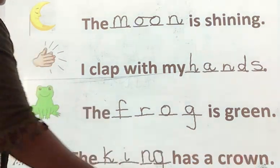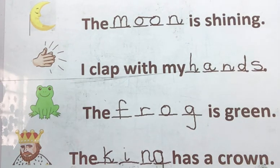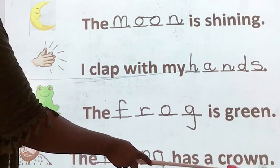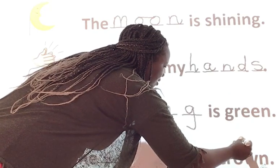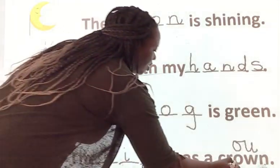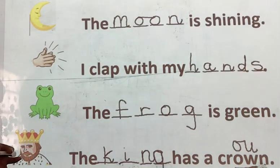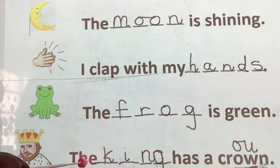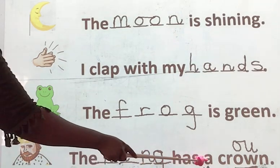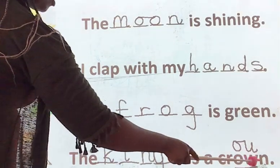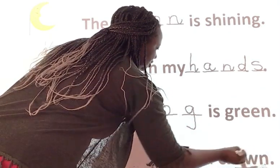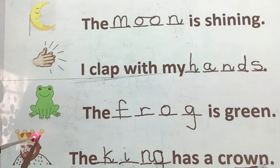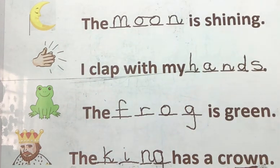Letter O and letter W sometimes sounds as OW. We know how — the OW we've learned is letter O and letter U as OW. But letter O and letter W also sounds OW, so this is also a digraph. So, the king has a crown. Does the king have a crown? Yes, this is the king's crown. So, the king has a crown. Good job. Thank you.